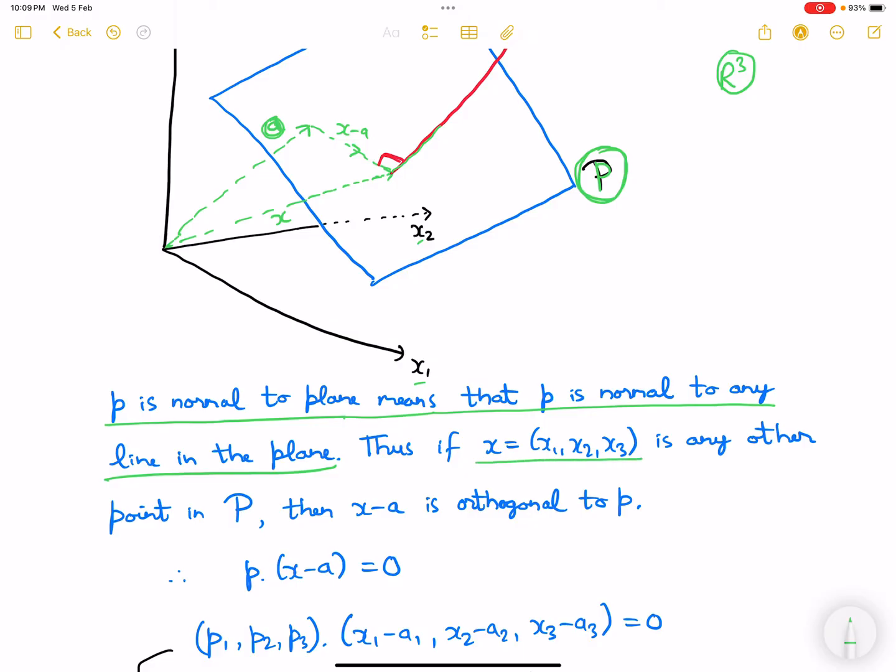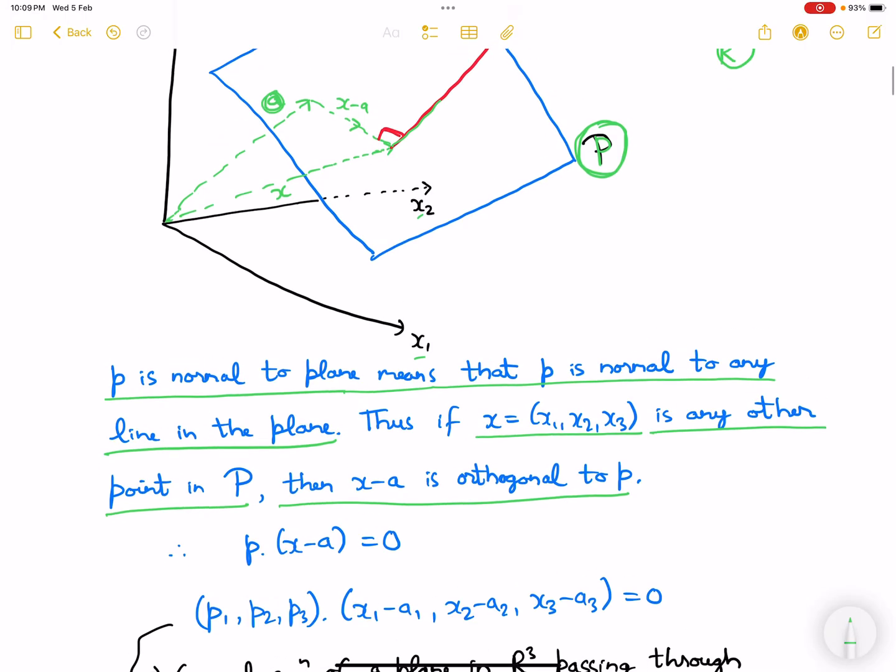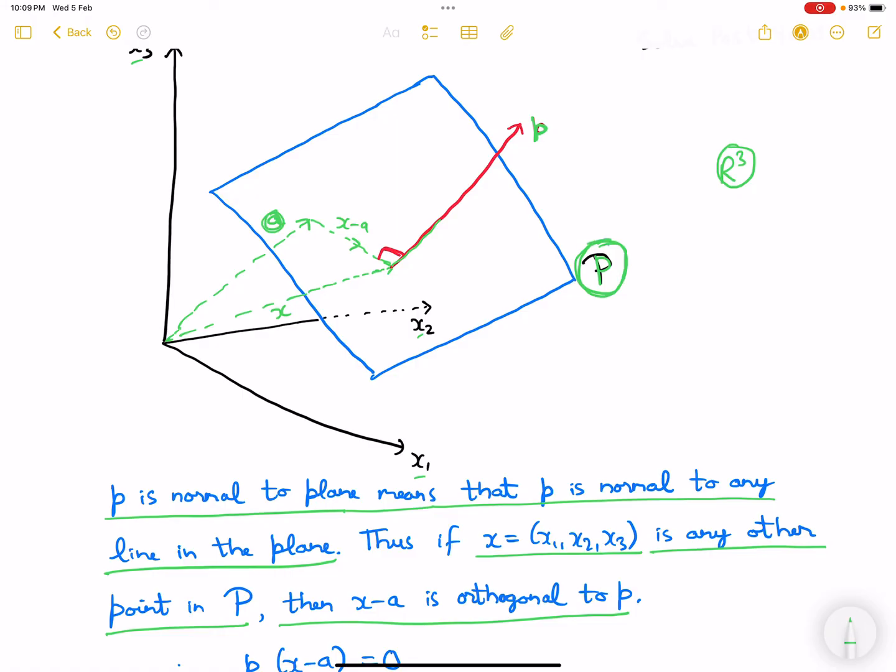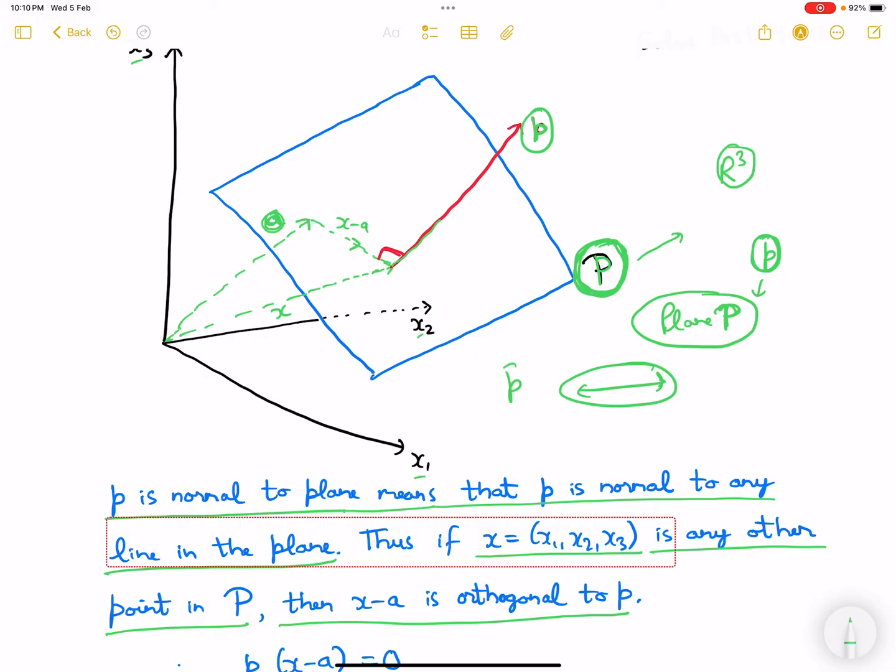Thus if x equals x1, x2, x3 is any other point in the plane, then x minus a is orthogonal to p. I'll repeat: initially P is the plane in R³, and a is a vector through which the plane passes, and p is a vector which is orthogonal to the plane P. If it is orthogonal to the plane P, that means it is orthogonal to any line in the plane.